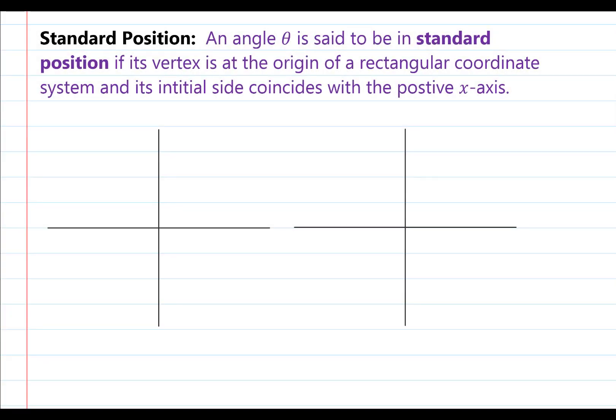Let's define standard position. An angle theta — that is the Greek letter theta — is said to be in standard position if its vertex is at the origin of a rectangular coordinate system, and its initial side coincides with the positive x-axis.